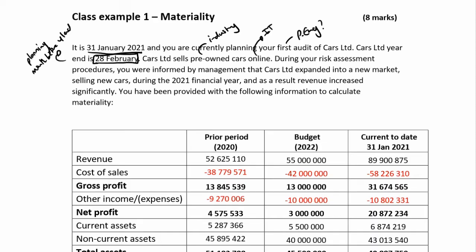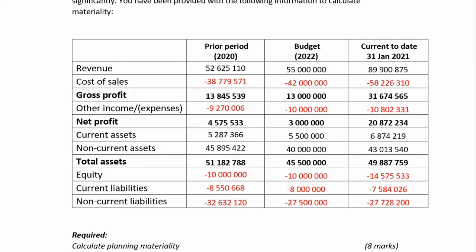During your risk assessment procedures, you were informed by management that Cars Limited expanded into a new market selling new cars during the 2021 financial year. There was a new market, and as a result revenue increased significantly. You have been provided with the following information to calculate materiality: prior period figures, budget for 2022, and current year to date 31 January 2021.